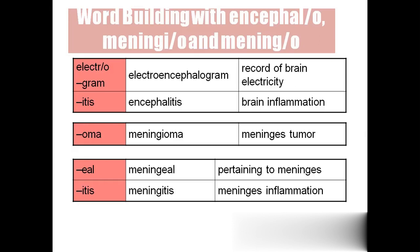'Meningioma' — if you have '-oma' as the suffix, which means tumor, so meningioma means a tumor of the meninges. 'Meningeal' means pertaining or related to the meninges. 'Meningitis' means inflammation of the meninges.